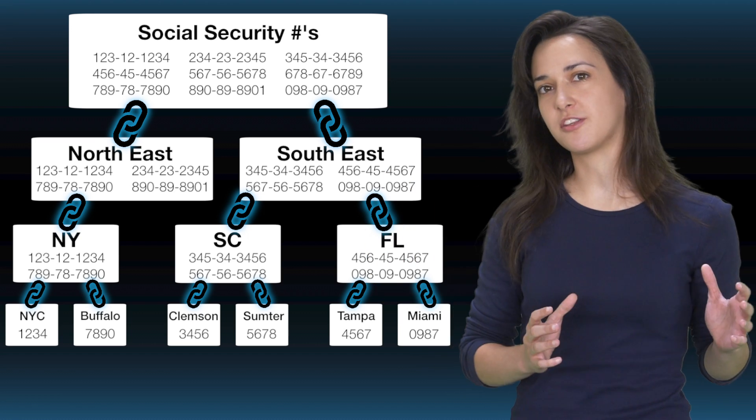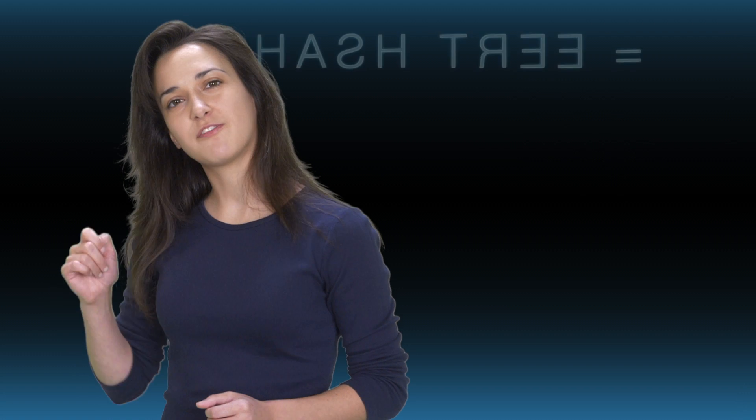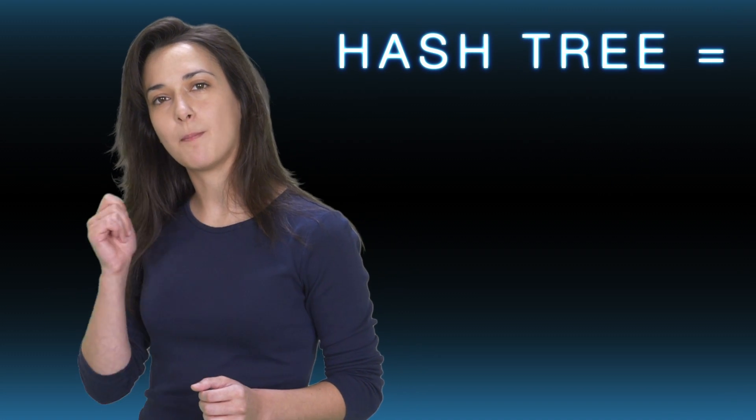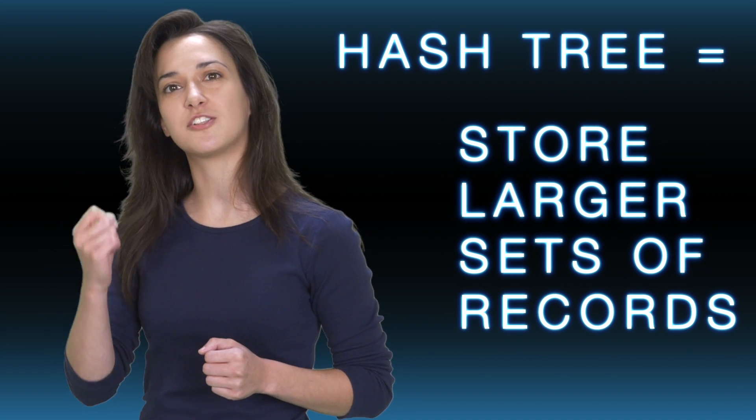Blocks of hashes stemming from each other that resemble a tree with branches and leaves. The incorporation of the hash tree to Haber, Stornetta, and Bayer's 1992 blockchain-type technology allowed them to securely store larger sets of digital records. On to the next question.